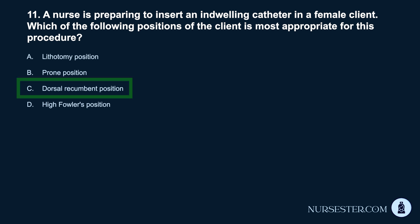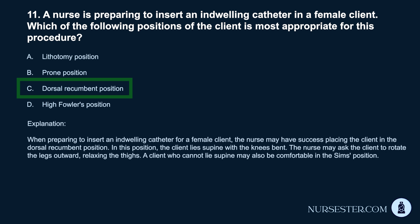Correct answer: C. Dorsal recumbent position. When preparing to insert an indwelling catheter for a female client, the nurse may have success placing the client in the dorsal recumbent position. In this position, the client lies supine with the knees bent. The nurse may ask the client to rotate the legs outward, relaxing the thighs. A client who cannot lie supine may also be comfortable in the Sims position.